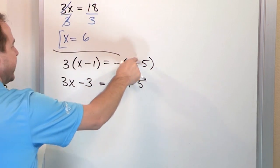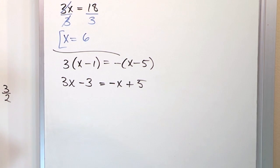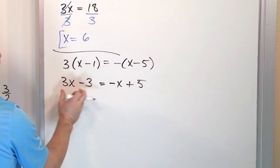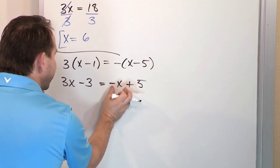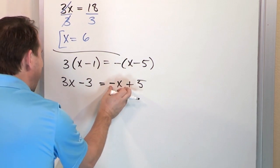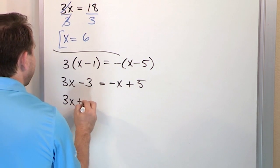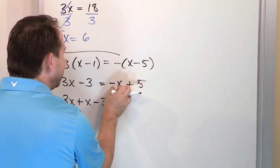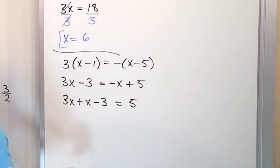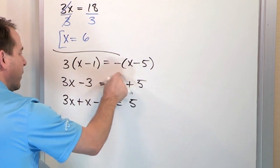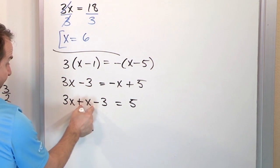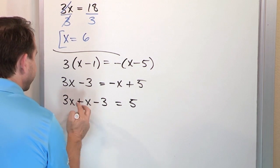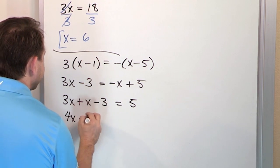After distributing we have 3x minus 3 equals negative x plus 5. Now get all x's on one side by adding x to both sides. On the left: 3x plus x minus 3 gives 4x minus 3. On the right: negative x plus x cancels to 0, leaving 5. So 4x minus 3 equals 5.